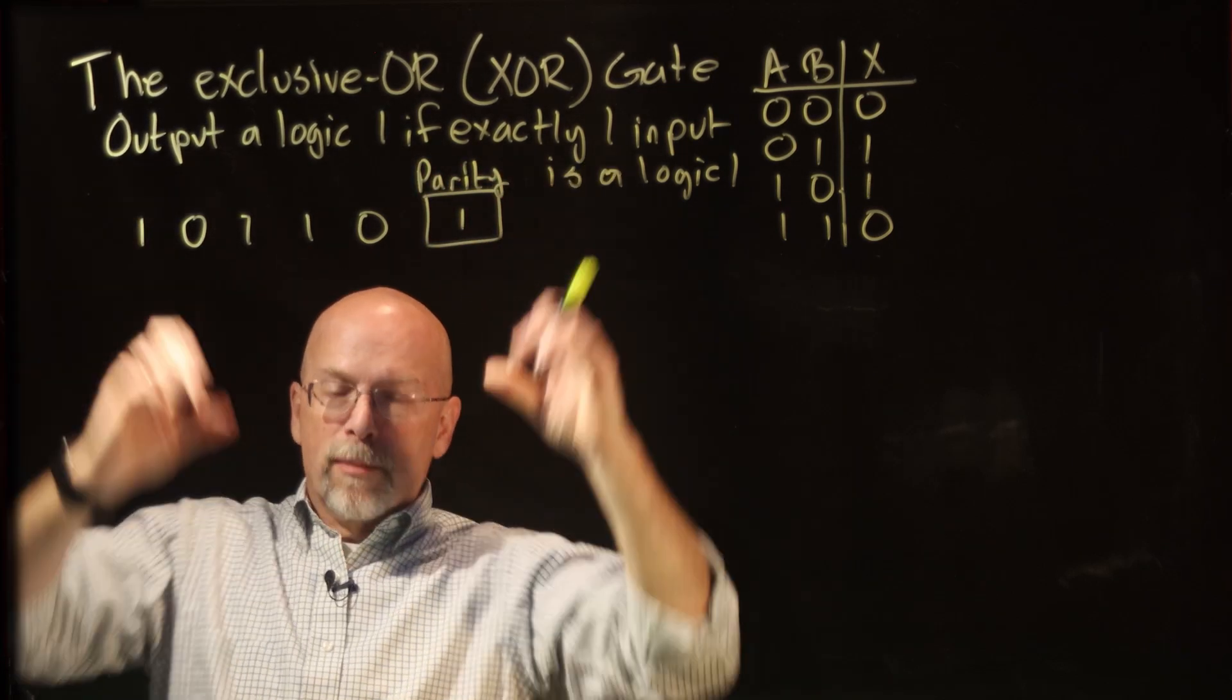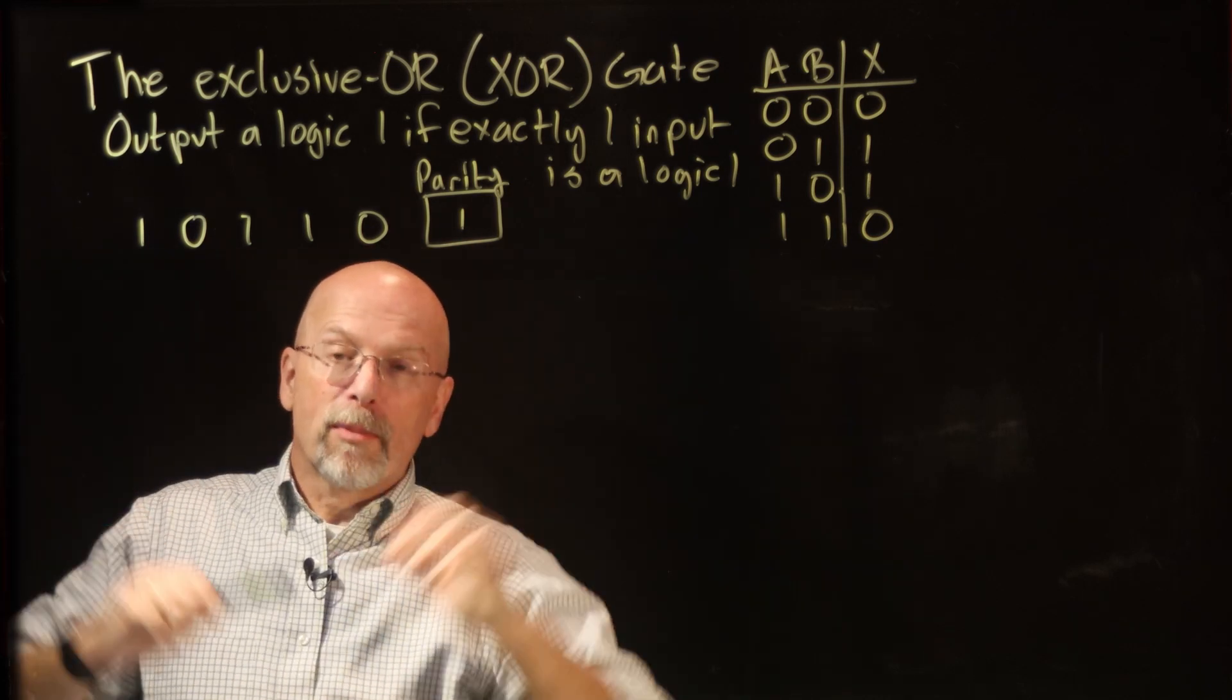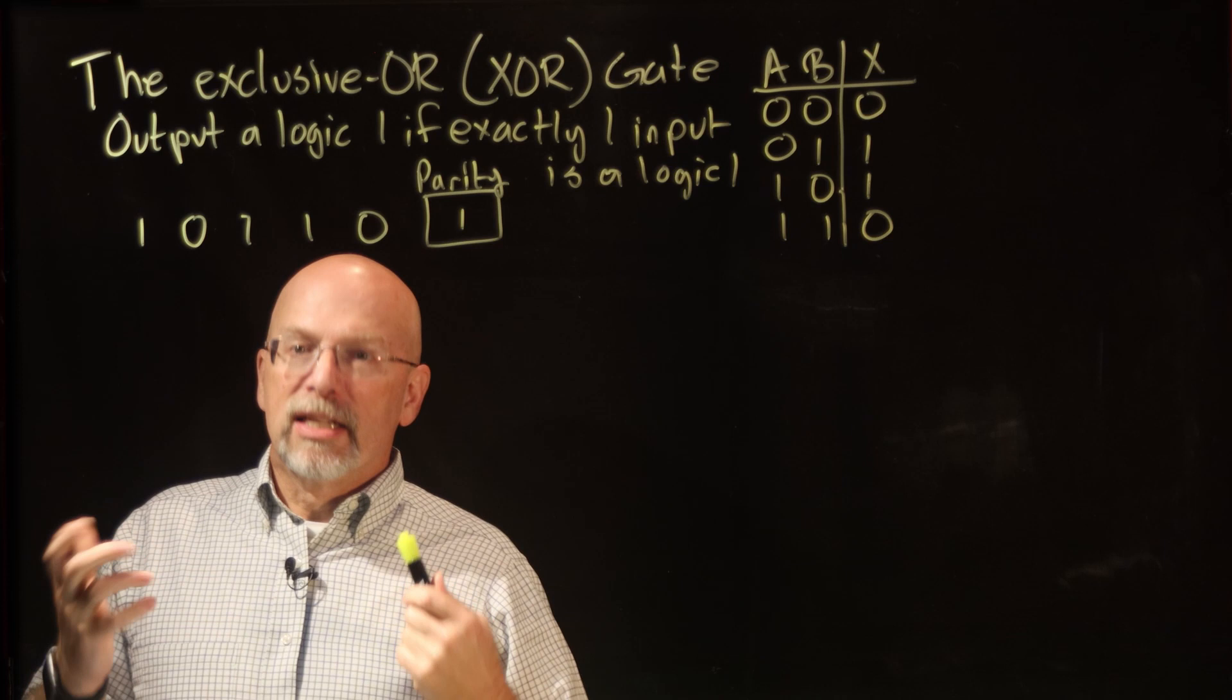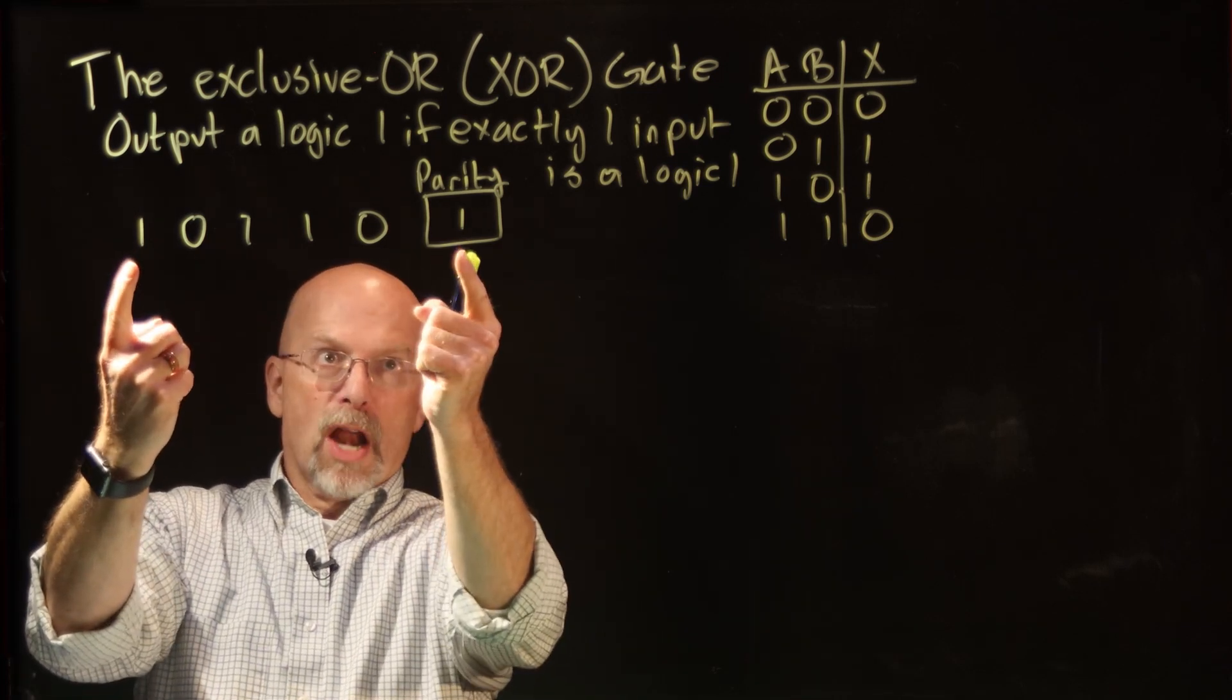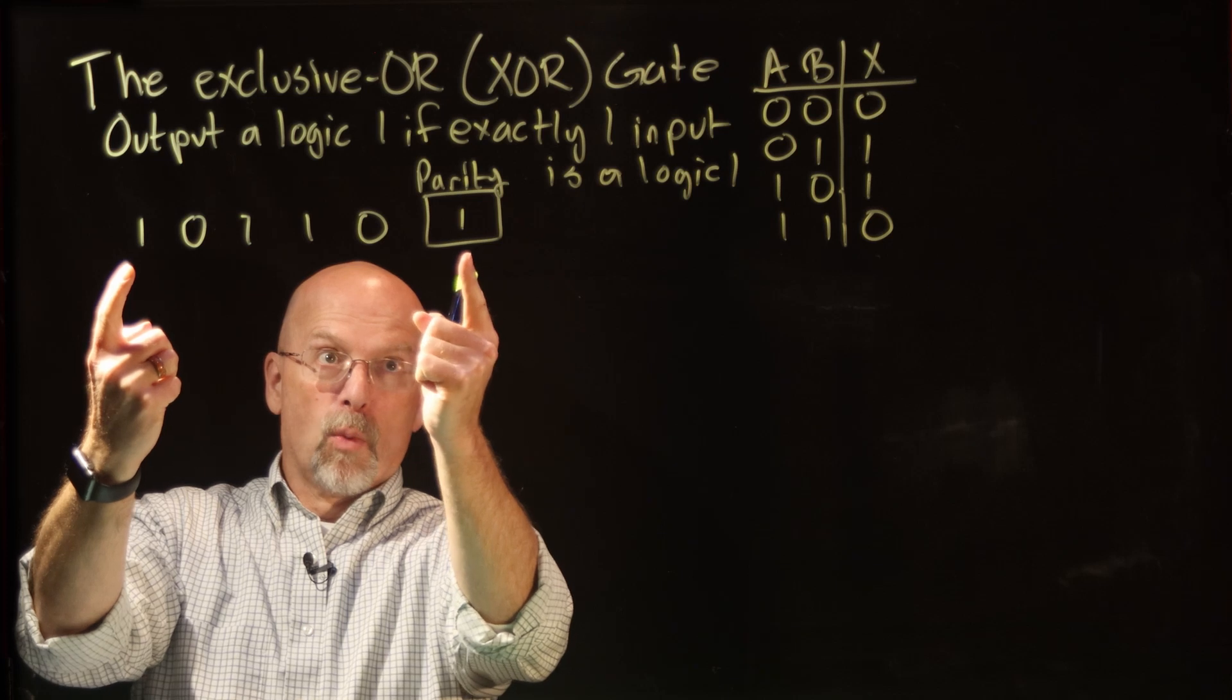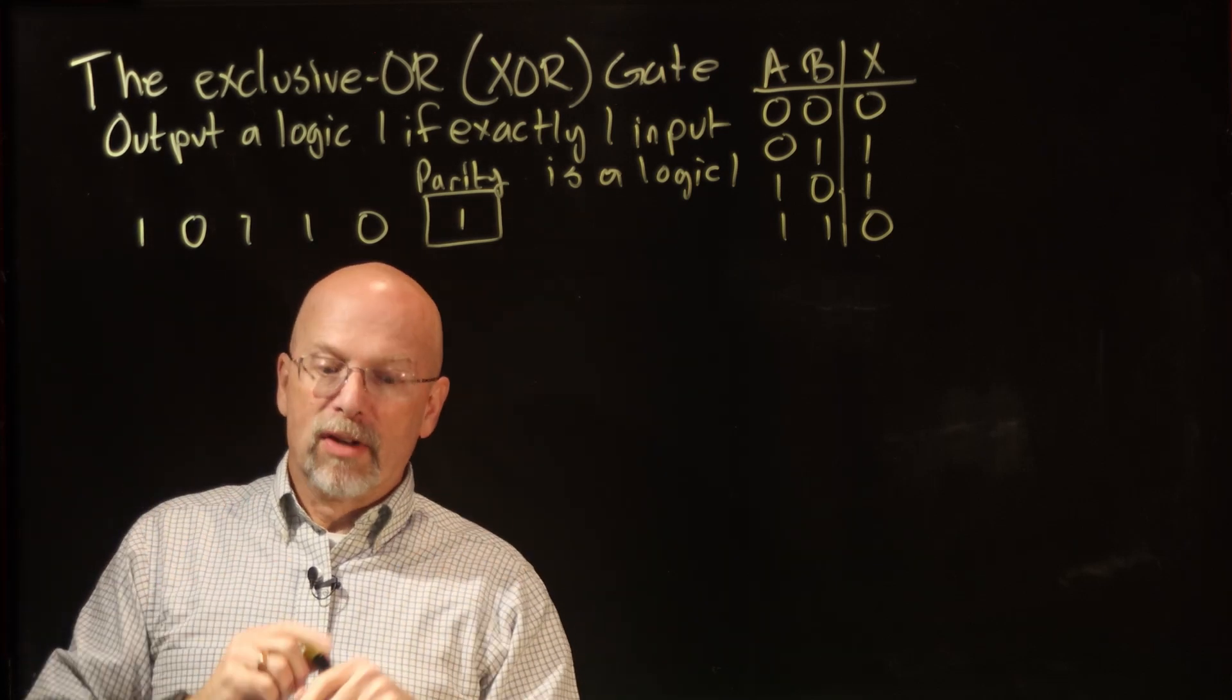If you look at the total number of 1s, the parity bit is set so that the whole number of 1s in that block is an even number always. Since the data was three 1s, an odd number, we put a 1 in the parity bit, giving us four 1s, an even number.